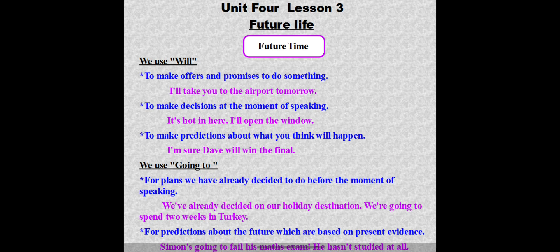We can use 'going to' plus the verb infinitive to express something planned for the future. For plans we have already decided before the moment of speaking: 'We have already decided on our holiday destination — we are going to spend two weeks in Turkey.'